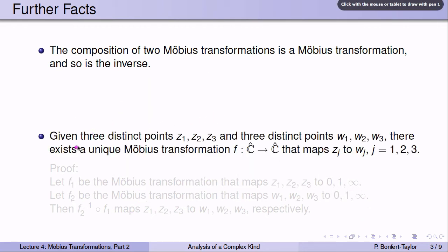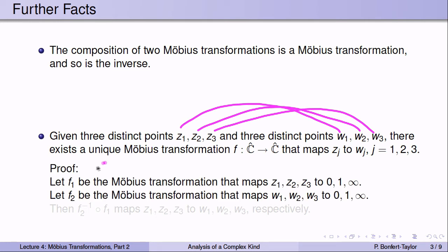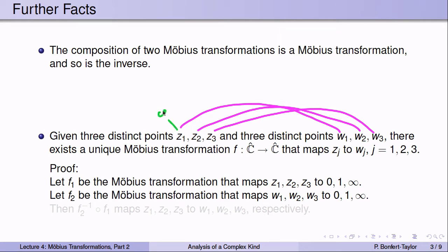Now we are able to show the following. Given three distinct points z1, z2, and z3, and three other distinct points w1, w2, and w3, there exists a unique Möbius transformation that maps z1 to w1, z2 to w2, and z3 to w3. It is very easy to see this given the facts we already proved. We know there is a Möbius transformation f1 that maps z1 to 0, z2 to 1, and z3 to infinity. Similarly, there is a Möbius transformation f2 that maps w1 to 0, w2 to 1, and w3 to infinity.